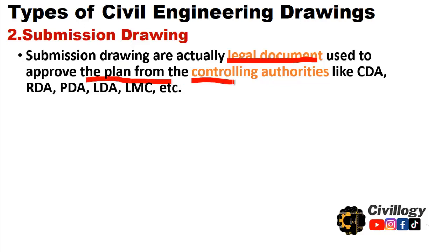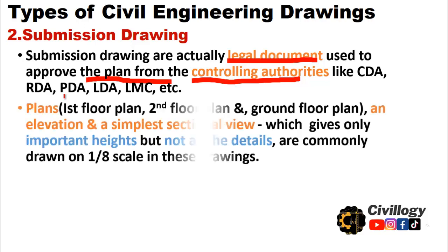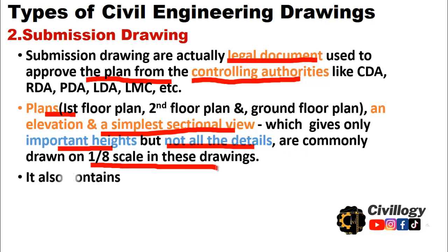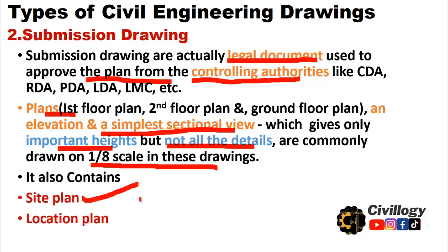The second type is the submission drawing. Submission drawings are legal documents used to get the plan approved by controlling authorities — such as CDA (Capital Development Authority), RDA (Rawalpindi Development Authority), PDA, LDA, LMC, and other development and municipal authorities. Submission drawings include plans of the ground floor, first floor, second floor, an elevation, and a simple sectional view giving only important heights. They are commonly drawn on a scale of 1/8.